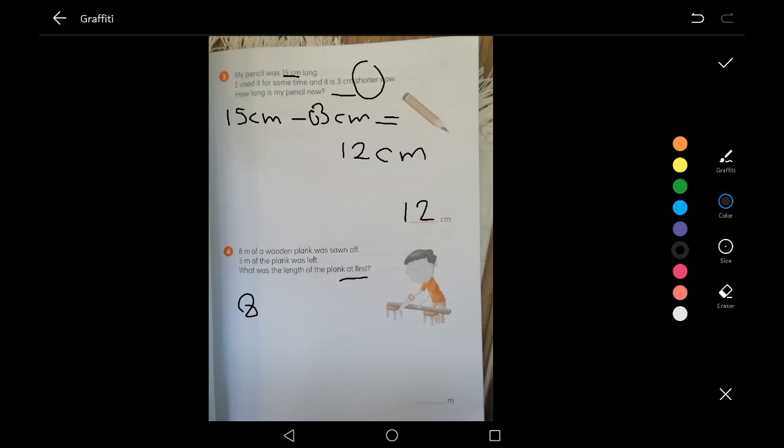So here, 8 meters plus 5 meters. Are they both in the same unit? Yes, they are. Meters, meters. So we just add them without converting to any other unit. So 8 plus 5 is equal to 13 meters. And here, the answer is 13 meters.